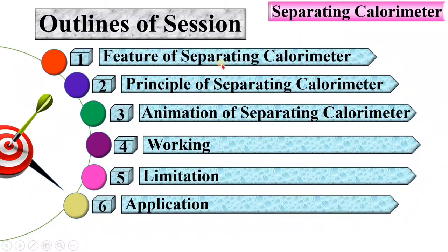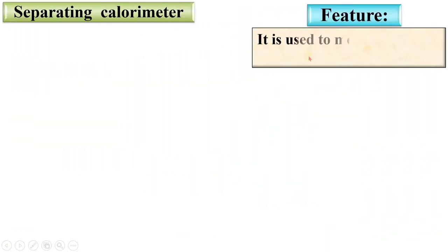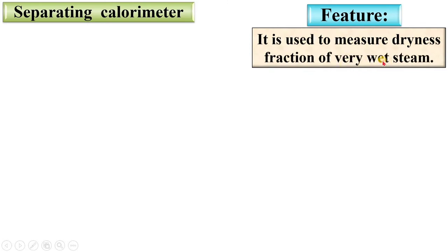Let's see the first one — features of separating calorimeter. It is used to measure the dryness fraction of steam, or very wet steam. Separating calorimeter is suitable to measure the dryness fraction of very wet steam.